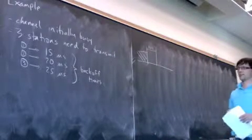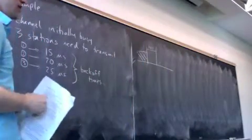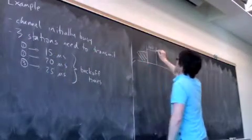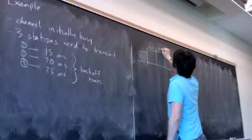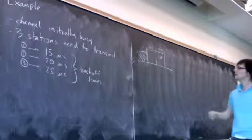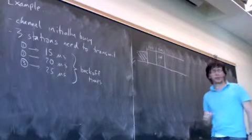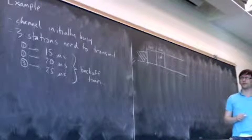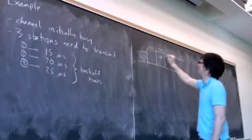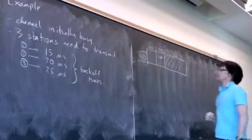So, the three back-off times we selected, 15, 20, and 25. Who will transmit first? Number one, 15 microseconds will elapse. There's your contention window. 15 microseconds elapse. Once 15 microseconds elapse, station one, station one's back-off timer has expired, and so, station one starts to transmit. So, that's station one.